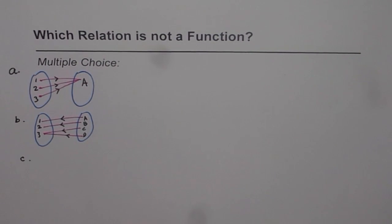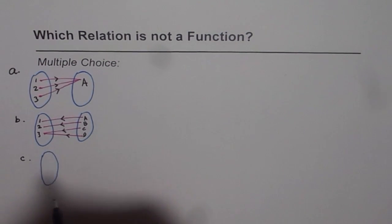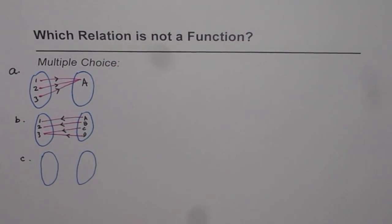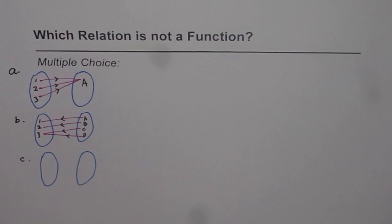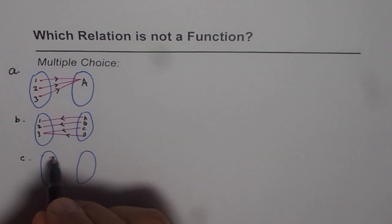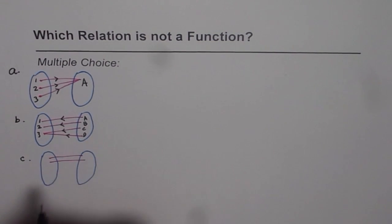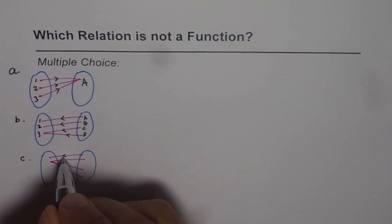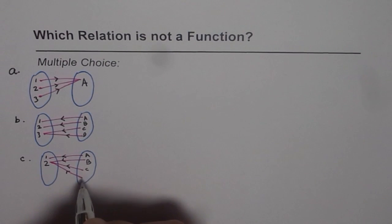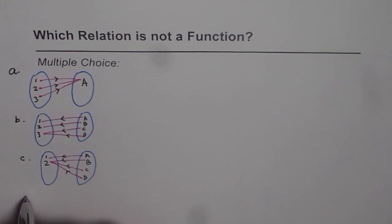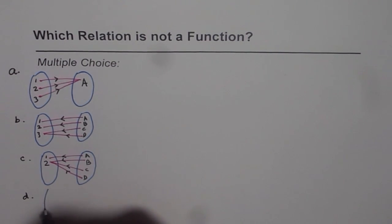One more choice — remember, you can have more than one correct answer here. What you really have to identify is which relation is not a function. Now here is another choice: we again have arrows, and the numbers are 1 and 2 on one side, with A, B, C, D on the other. This is the last mapping diagram choice, labeled D.